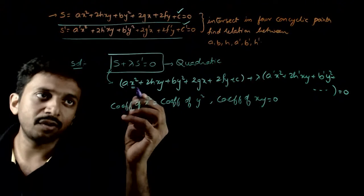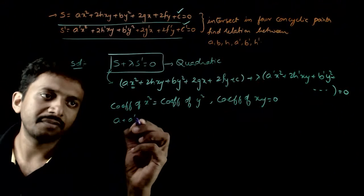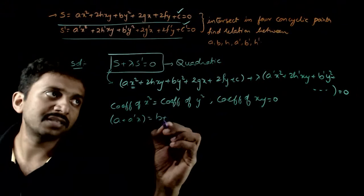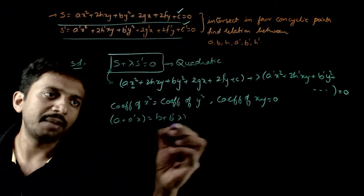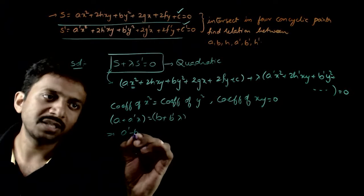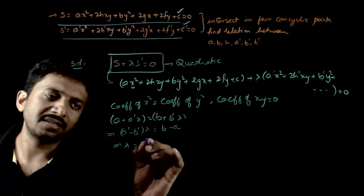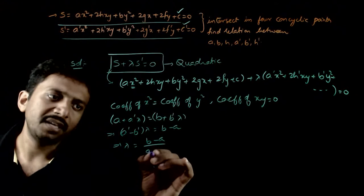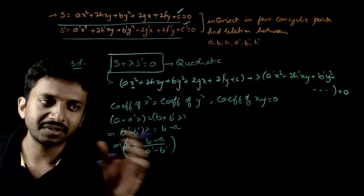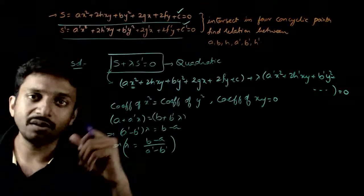Applying the first condition: coefficient of X² is A + λA dash, and coefficient of Y² is B + λB dash. Setting them equal gives A + λA dash = B + λB dash, which implies (A dash − B dash)λ = B − A, so λ = (B − A) / (A dash − B dash).